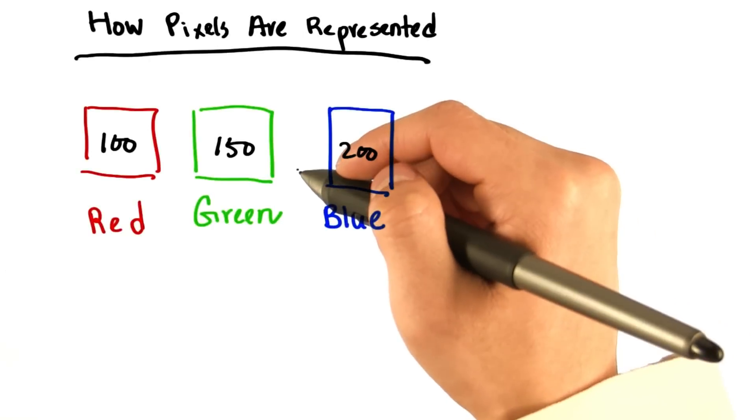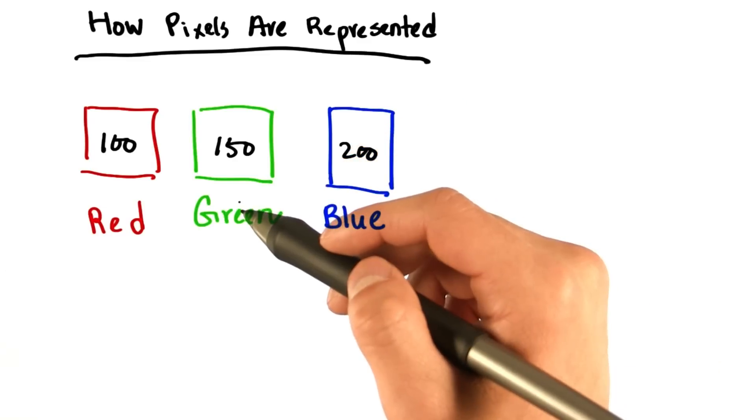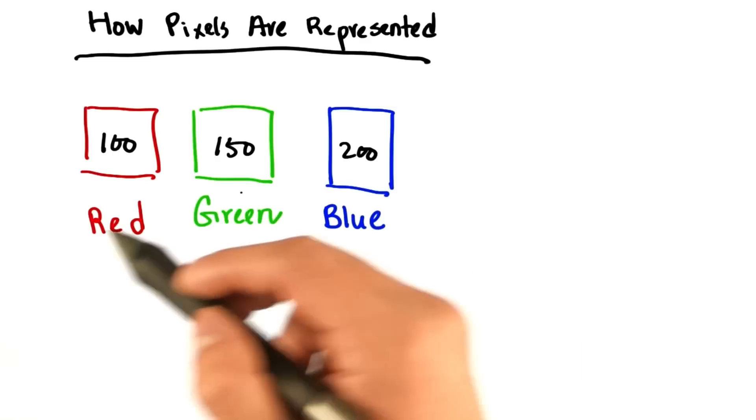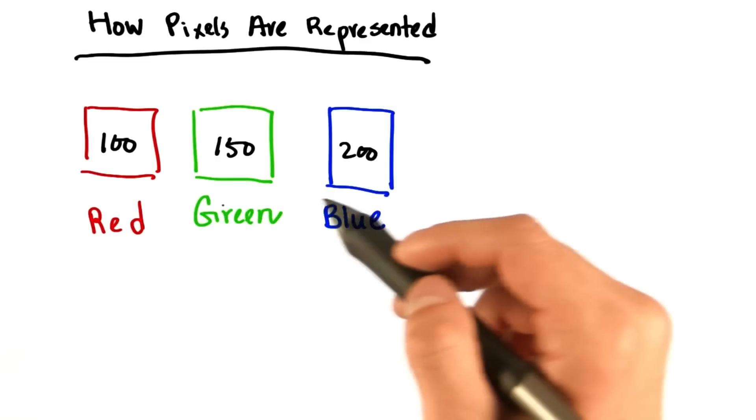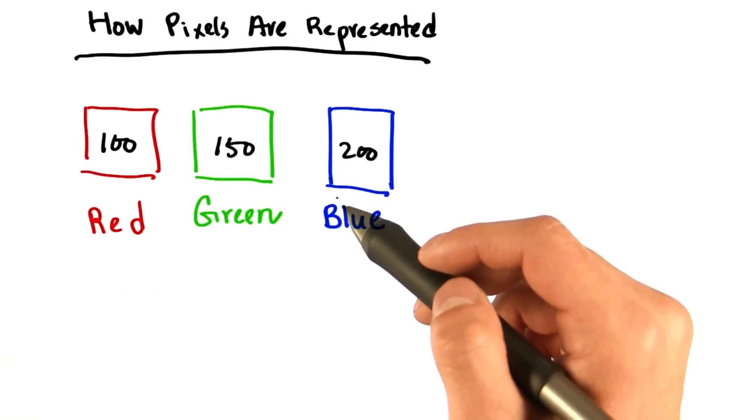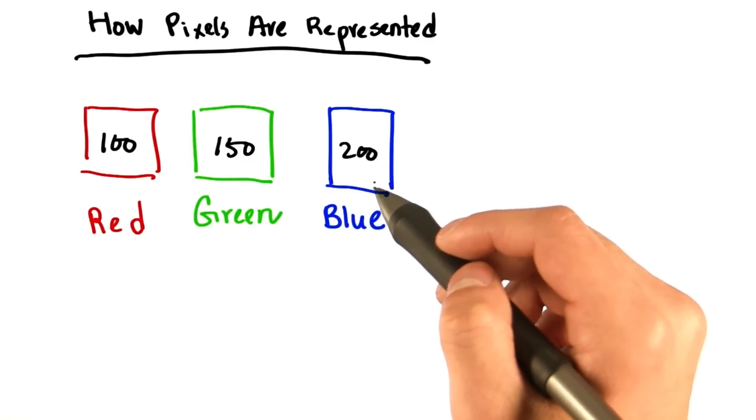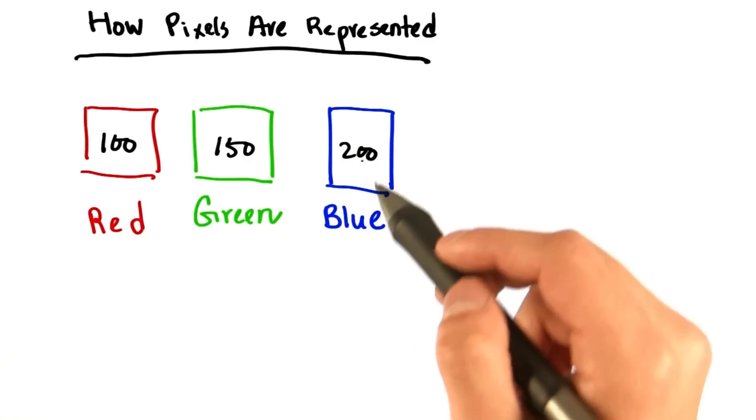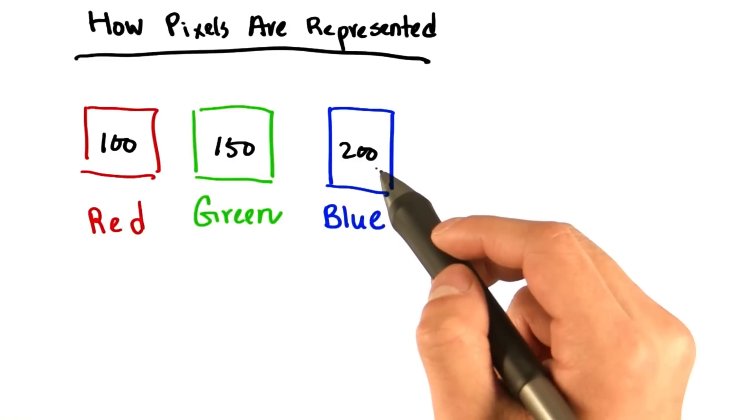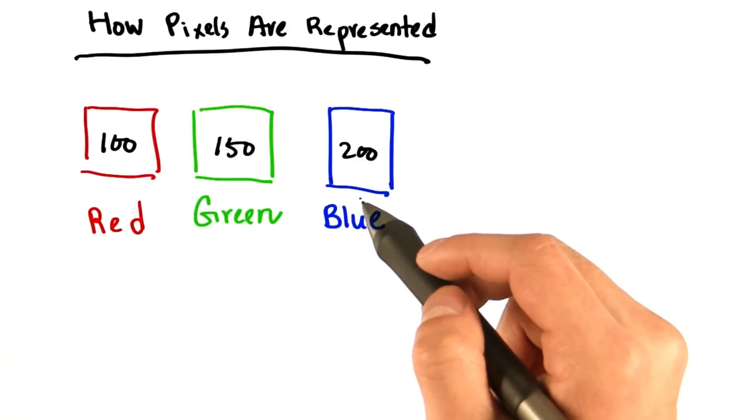To convert an image from color to black and white, we first have to understand how colored digital images are represented. The most common format is to specify how much red, green, and blue is presented at each pixel. Each color is called a channel. Zero means that color is fully absent, whereas 255 means that color is fully saturated.